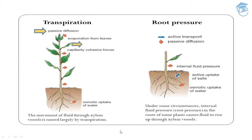What is the difference between transpiration and root pressure as driving forces? Transpiration is a passive diffusion from the leaf and it cools off the entire plant body sometimes 10 to 15 degrees by evaporative cooling; cohesive forces are involved, and the movement of fluid through the xylem vessel is caused largely by transpiration. Root pressure: the blue arrow represents active transport and the red arrow represents passive diffusion. Under some circumstances, internal fluid pressure — called root pressure — in the roots of some plants causes fluid to rise up through the xylem vessel. Root pressure is a positive pressure responsible for pushing water up to a small height in the stem.